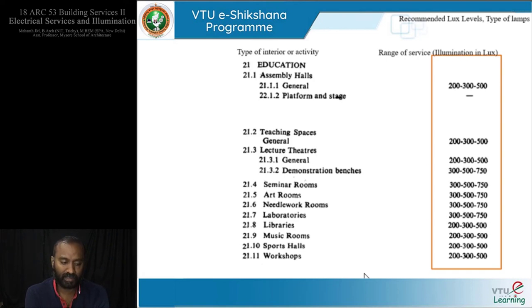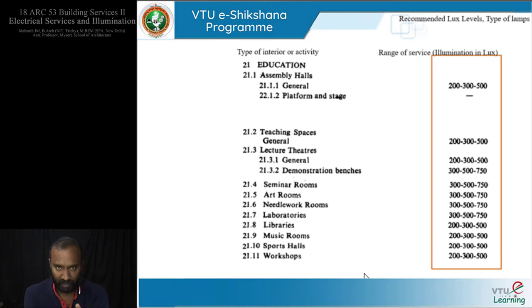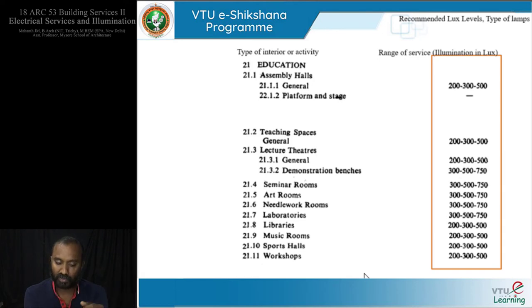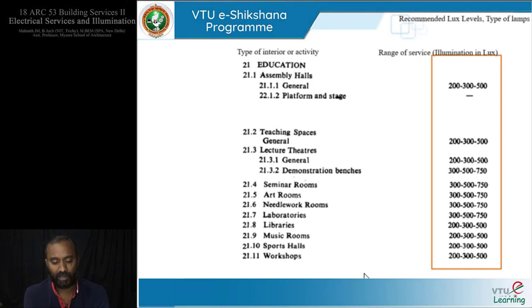For education buildings: assembly halls and general teaching spaces are 200–500 lux. Demonstration benches, seminar rooms, art rooms, laboratories, and needlework rooms require higher lux levels because subtle detailed work is performed there. Outdoor sports halls have no artificial lighting control discussed here, but indoor sports halls also factor in fenestration and how much daylight enters the building.